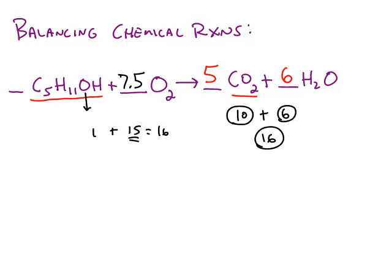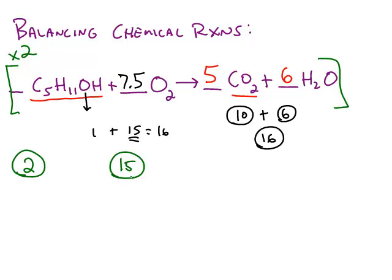Now to properly balance this, I can't leave a coefficient with a decimal. So to avoid that, I'm going to multiply every coefficient by a factor of 2, which is going to change my coefficients to 2, 15, 10, and 12. Then I will have a balanced chemical equation.